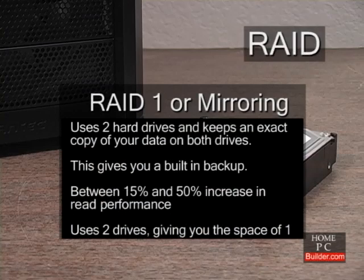RAID 1, sometimes referred to as mirroring, uses two hard drives and keeps the same data on both drives. This gives you a built-in backup at all times, and gives you a 15% to 50% performance increase in reading data from the drives. The downside is that you're using two hard drives and only getting the space of one — so if you have two 750GB drives, you're only getting 750GB of hard drive space.